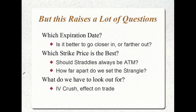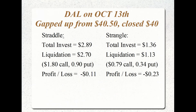We talked about the IV crush — let's get more in depth. On October 13th after earnings, the stock was at $38.94 before and gapped up to about $40.50 after earnings, closing at about $40 — only about a 4 to 4.5% move. For the straddle at the 39 strike, we invested $2.89. The liquidation was $2.70 — the 39 call went up to $1.80 but the put dropped to $0.90 — giving us an 11-cent loss, even with a 4.5% movement.